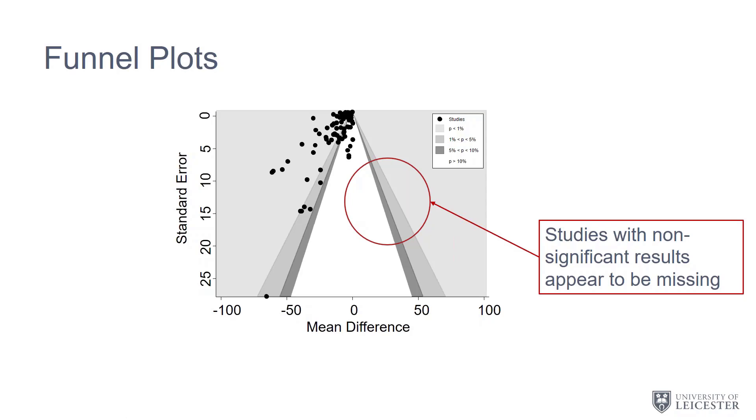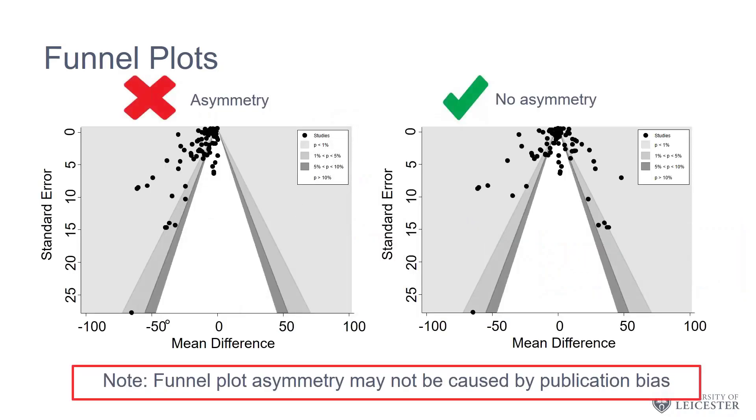The converse is that if all of our points were around this area of no statistical significance, then that would suggest the asymmetry might be caused by factors other than publication bias. So on this plot I'm showing you an asymmetrical funnel plot and one which is more symmetrical.